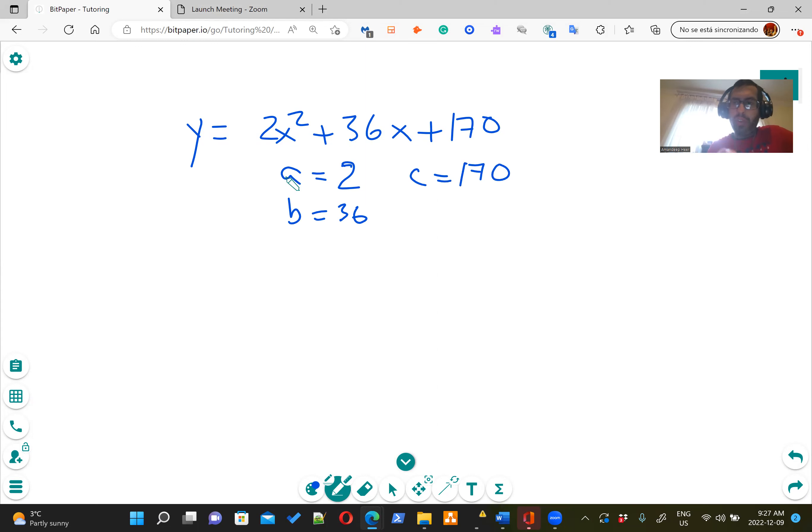Now we're going to use this formula. This is the trick. H is negative B over 2A. It's amazing, right? And this is going to save you a lot of work, unlike completing the square, which takes forever.